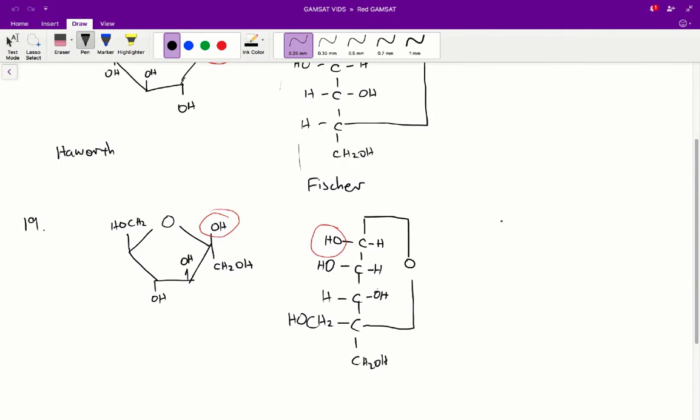Question 20. Again, it's just matching them up. So let's take a look at D. For the first carbon on the Haworth structure, we have an OH group on the bottom side.